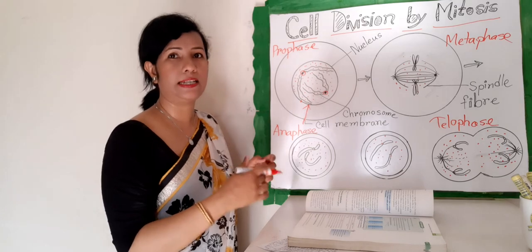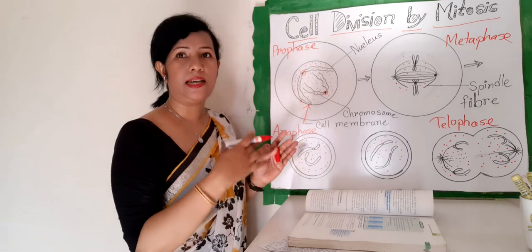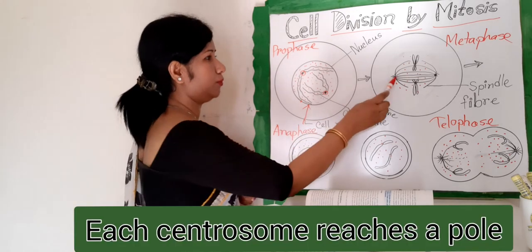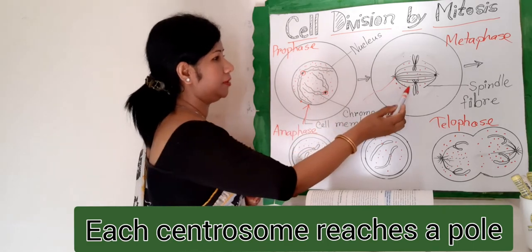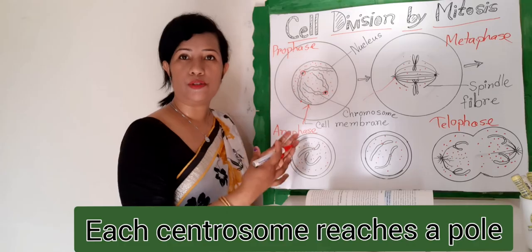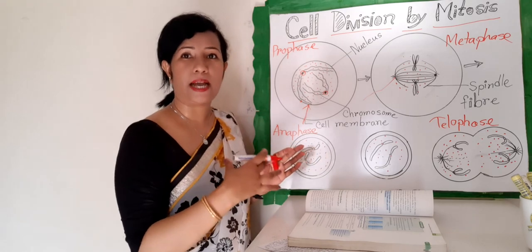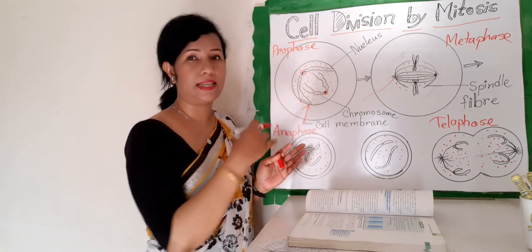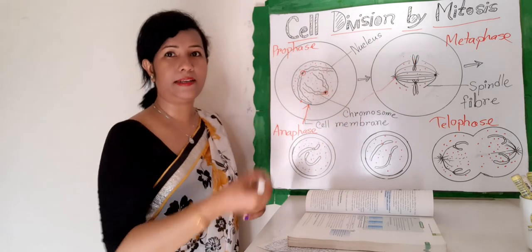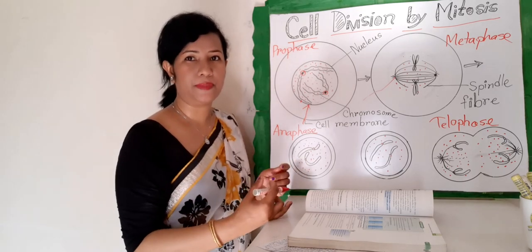Next is metaphase. In metaphase, each centrosome reaches a pole, and spindle fibers form. Chromosomes help to organize and support the production of the spindle microtubules. The chromosomes line up and are attached by their centromeres to the spindle.